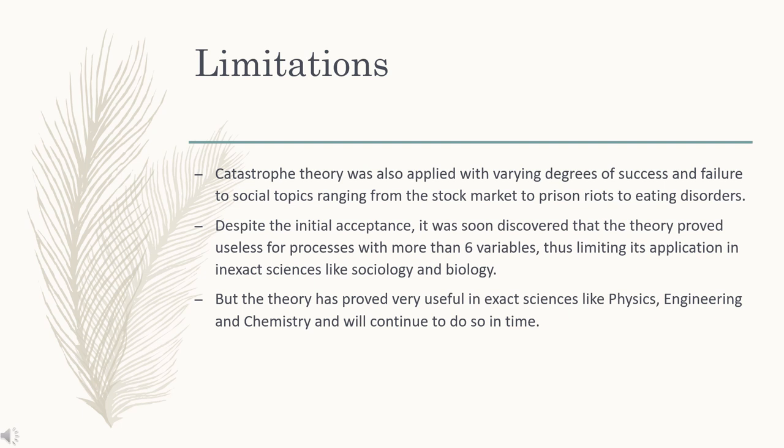Despite the initial acceptance, it was soon discovered that the theory proved useless for processes with more than 6 variables, hence limiting its application in inexact sciences like sociology and biology. Despite this, the theory has proved very useful in exact sciences like physics, engineering, and chemistry, and will continue to do so in time.